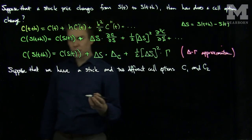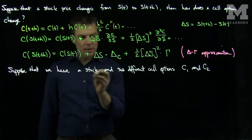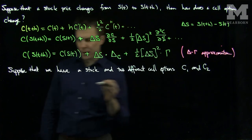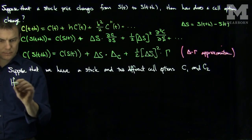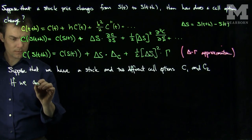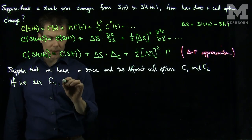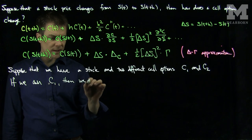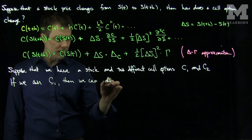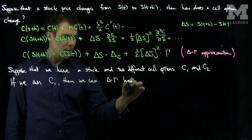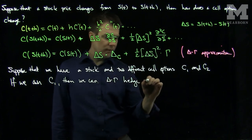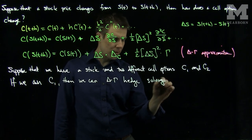Then what we can do is construct, if we own the stock and the call option, so if we own, say, C₁, then we can delta-gamma hedge by solving the system.